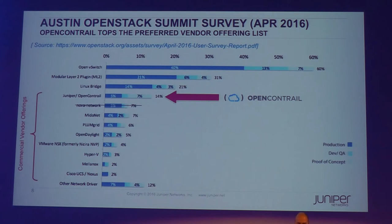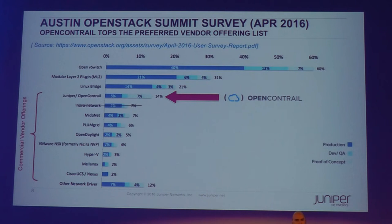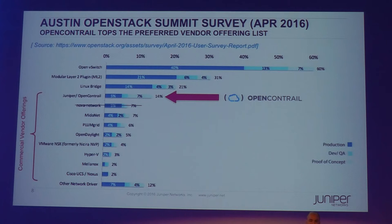Since we are at an OpenStack event, it makes sense to refer to some of the latest survey published after the OpenStack Summit in Austin two months ago. We see that regular Open vSwitch Neutron implementations are the most common deployments used by OpenStack users, and this is fine for regular deployments. However, for demanding users who have complex use cases, large-scale deployments, and need advanced features like service chaining, OpenContrail is leading the pack in terms of SDN controller implementation.